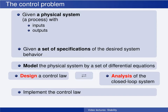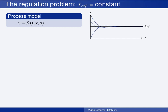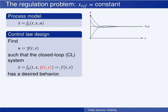For regulation problems, the control objective is to keep the states at a constant reference value. We have developed a process model — a set of ordinary differential equations that describe the dynamics of the system that we want to control. The control law design consists of finding a control law gamma, which in general may include time-varying signals like feed-forward from the reference signal and feedback of the states of the system. The control law should be designed such that the closed-loop system has the desired behavior.